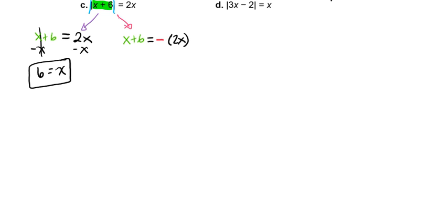Then we'll come over to our other problem, x plus 6 equals negative 2x. We'll subtract x from both sides and get 6 equals negative 3x. We'll divide by negative 3, and that gives us negative 2 equals x.